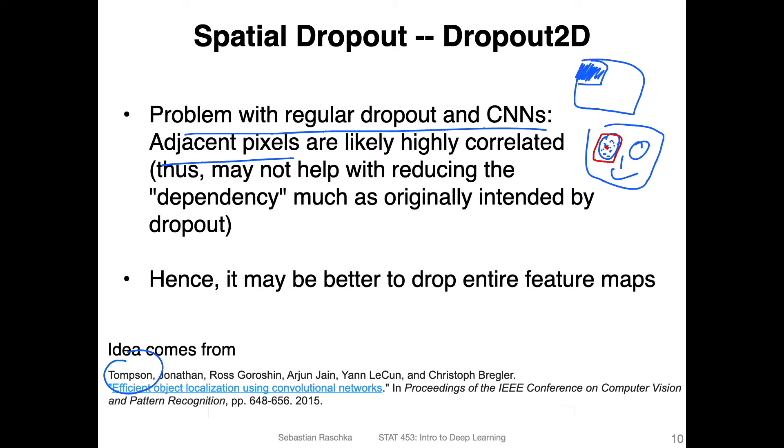So here, the argument is to instead of masking or dropping out individual positions in a feature map, we are dropping out the channels. So usually in the later stages of the network, these channels represent higher or larger concepts, as we've talked about in the last lecture, where we have a bigger picture of concepts like a channel represents the eye, one the mouth, one the nose, and so forth. So here, the idea is really to drop these higher order features in that way, dropping entire feature maps instead of individual pixels.